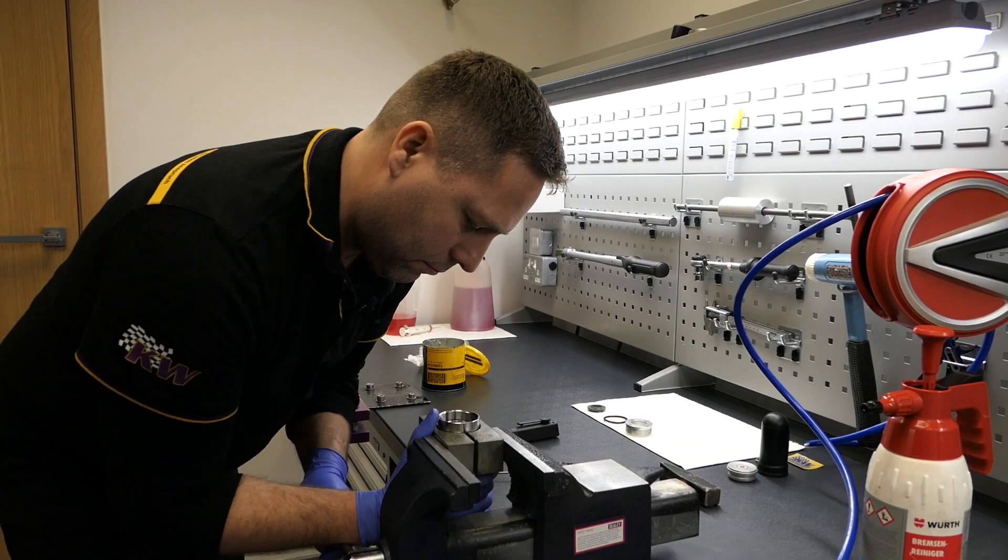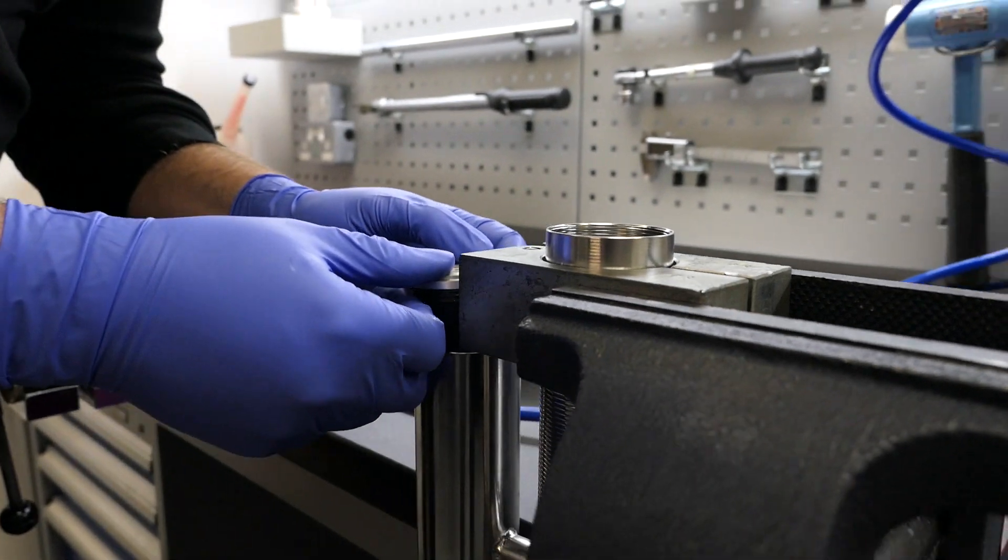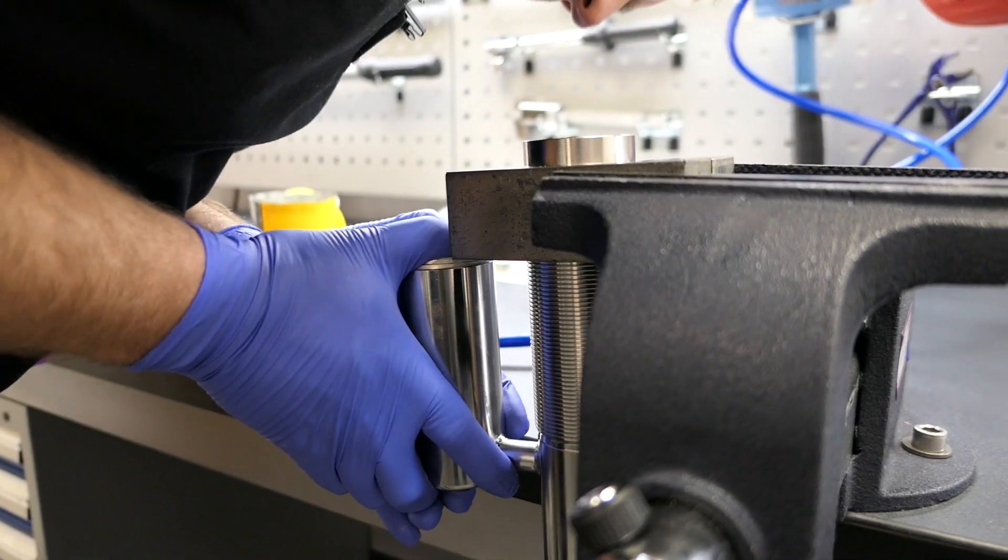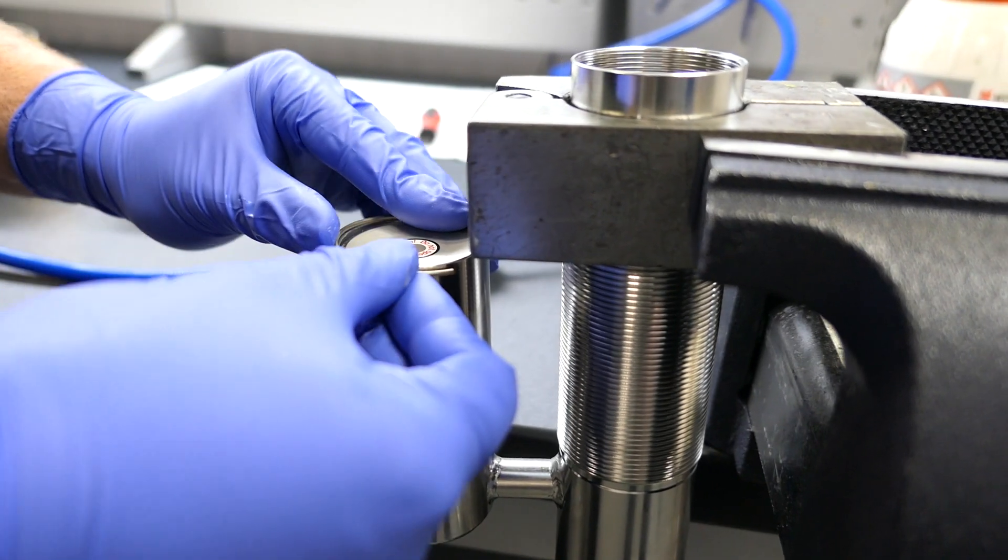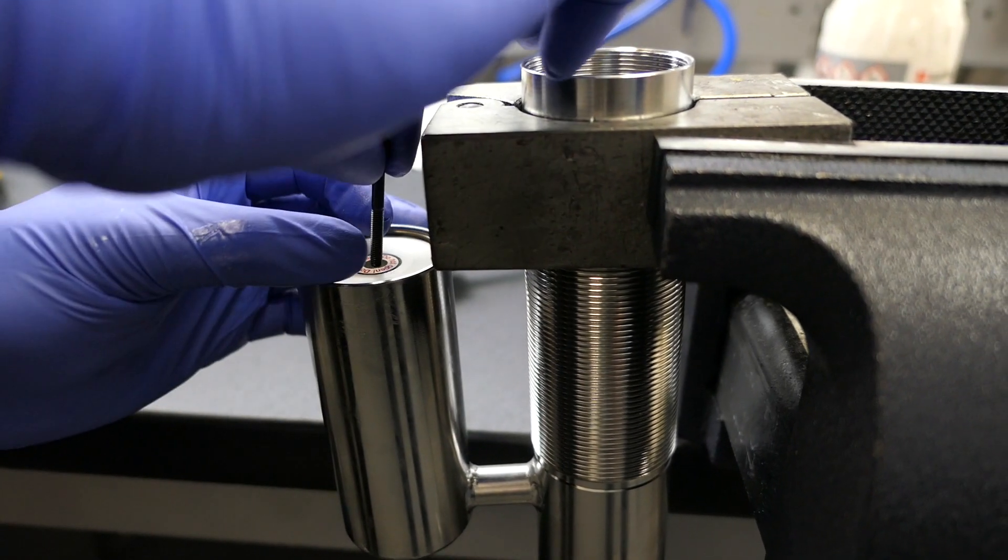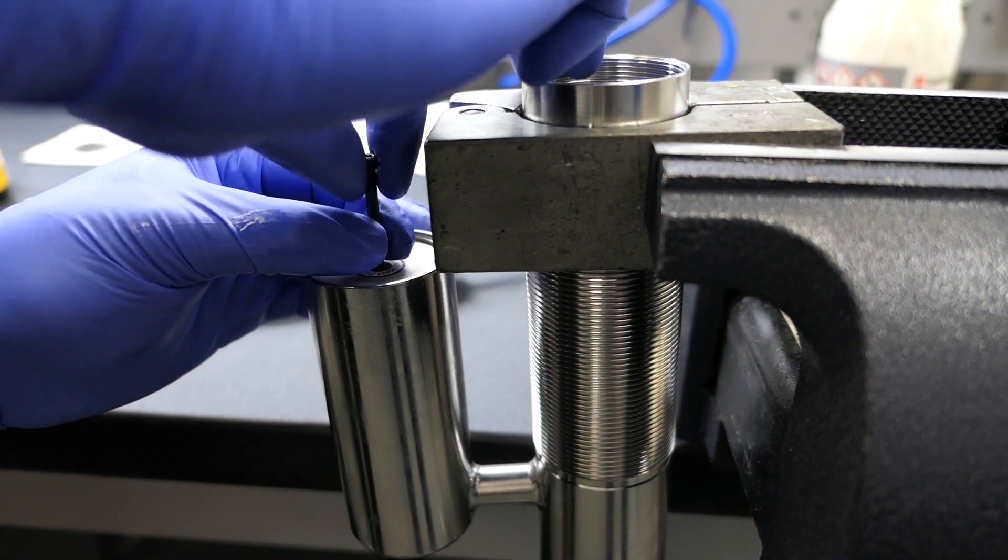With cleaning taken care of, Rich assembles the V3's oil reservoir internals by inserting and then sealing a bladder within it. So that's the reservoir now assembled, just going to pop it up.